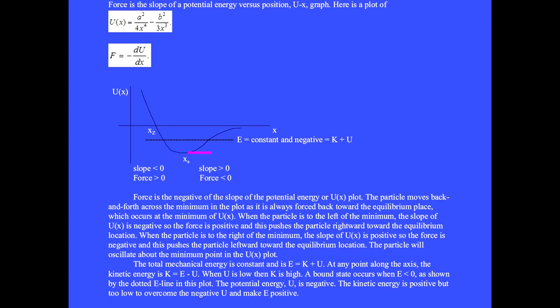When the particle is to the right of the minimum, the slope of U(x) is positive so the force is negative and this pushes the particle leftward toward the equilibrium location. The particle will oscillate about the minimum point in the U(x) plot.